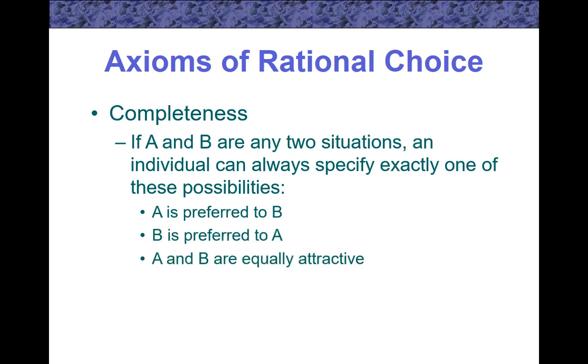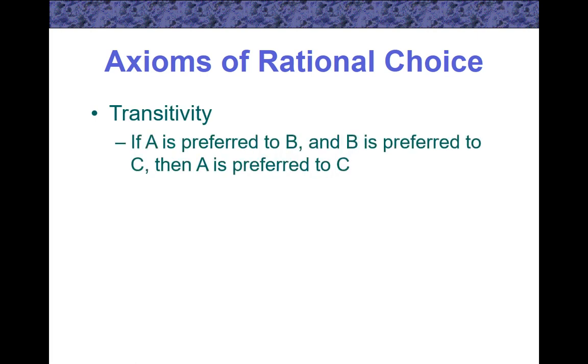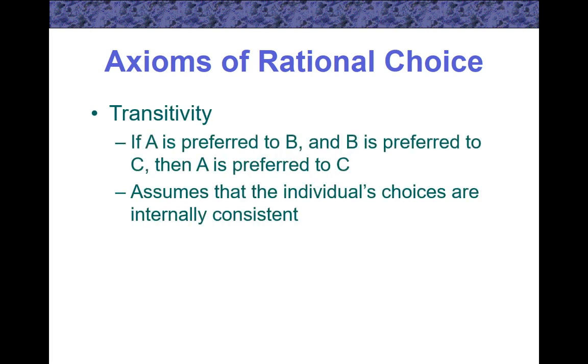Transitivity: If A is preferred to B, and B is preferred to C, then A is preferred to C. This assumes that the individual's choices are internally consistent.